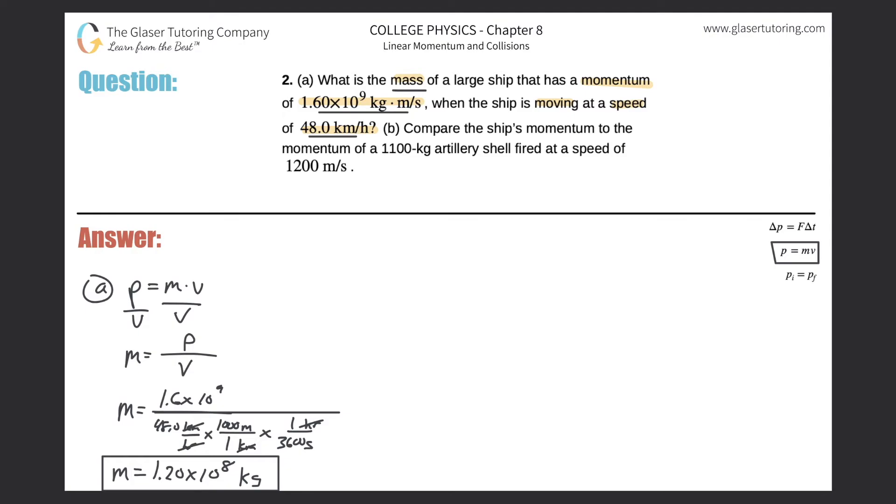All right. So now let's take a look at letter B. So it says compare the ship's momentum, and that's the ship's momentum, to the momentum of an 1,100 kilogram artillery shell fired at a speed of 1,200 meters per second.